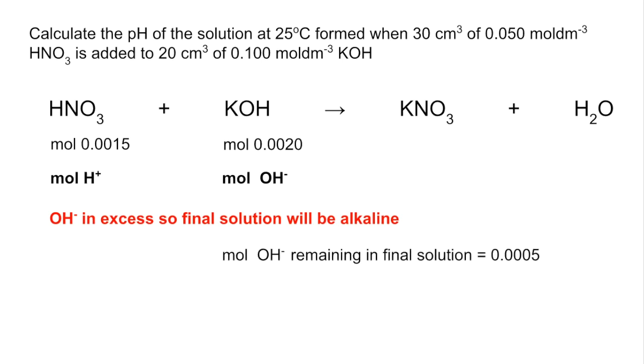So the moles of hydroxide ions left is going to be the difference, so that number there. That's in a total volume of 50 cm cubed, so we need to turn that into a concentration now, moles over volume. So we've got that concentration of hydroxide ions.